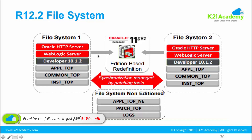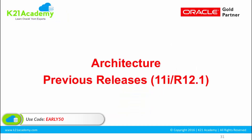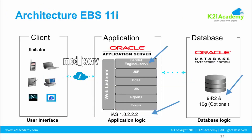Now let's look at the architecture differences in previous releases. This is the architecture of 11i, that is 11.5 onwards — 11.5.1 through 11.5.10. These are called 11i. Now, all three — 11i, 12.0 or 12.1, and 12.2 — have a three-tier architecture. You have the database on the right, application or middle tier in the middle, and the client tier on the left.